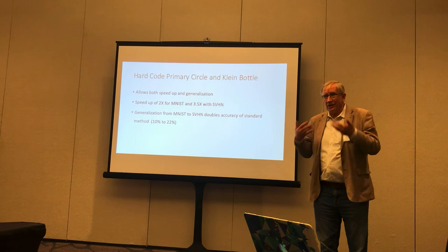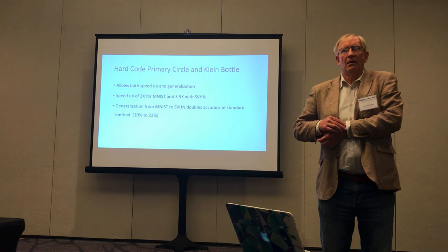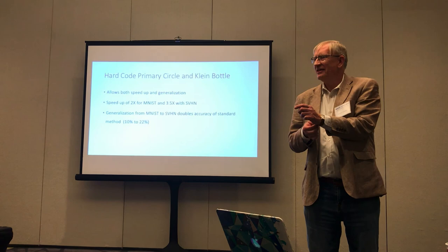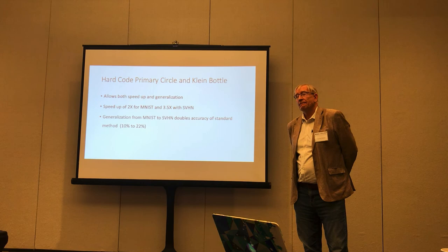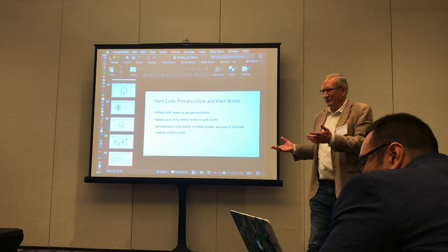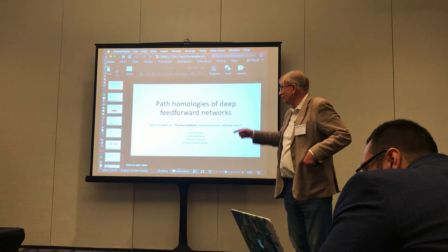In the Q&A, a question was raised about whether this approach could be used to understand error as it propagates through the network, given current interest in explainable AI. The speaker responded that he didn't see why not — you can treat these networks as feature networks and color them by individual data points, seeing what's coming through the layers. Ideally, that information could be used to build a much smaller network.